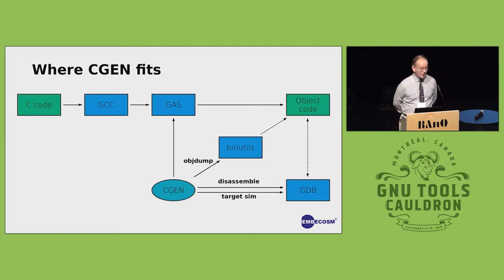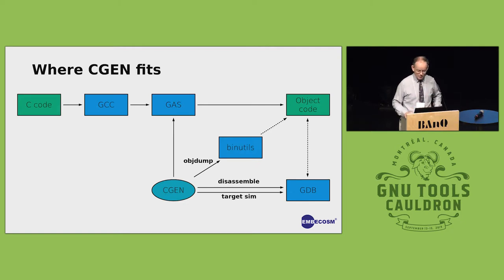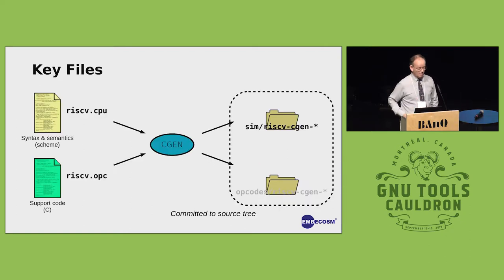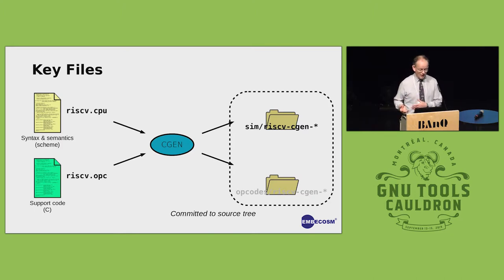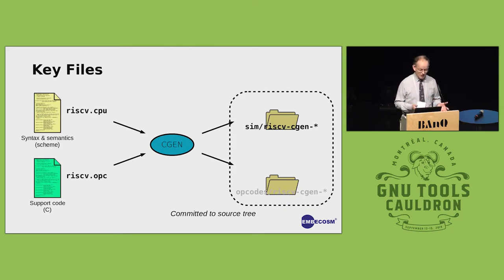For those who don't know, CGen is an architectural description in Scheme. It defines the syntax and semantics, and it can give you an assembler, disassembler, and if you put the semantics in, a simulator. Basically for each architecture you define two files: a Scheme description in a .cpu file, and some supporting C code in a .opc file. CGen will generate the relevant standard files in the sim directory for the simulator, and in the opcodes directory for libopcodes assembler and disassembler.